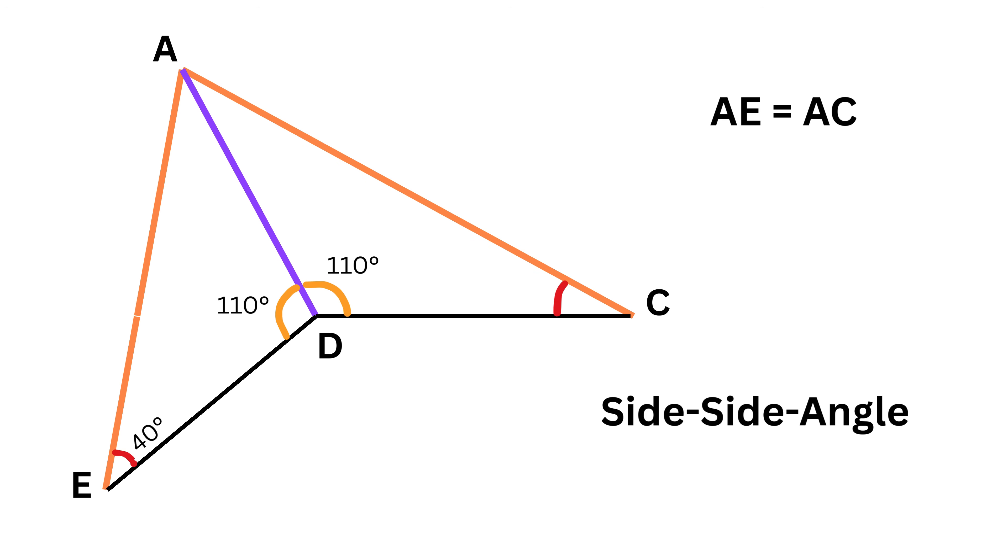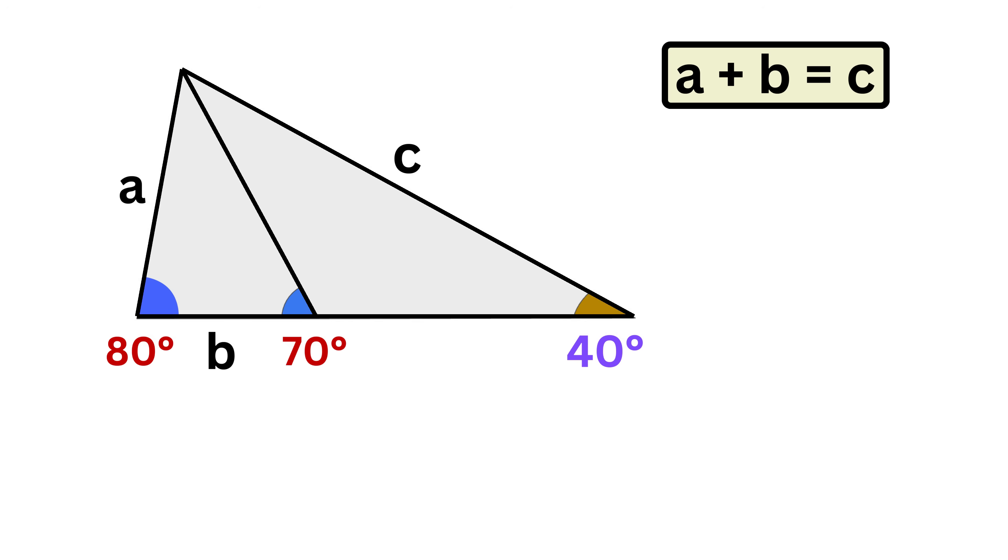Therefore, using the side-side-angle criteria, we conclude that triangles ADE and ADC are congruent. As a result, the corresponding angles in these triangles are also equal, and hence the required angle at vertex C will be the same as the angle at vertex E, which is 40 degrees.